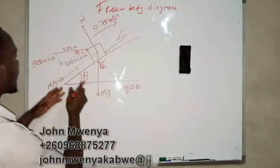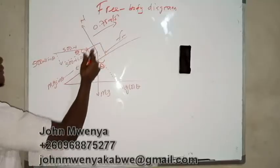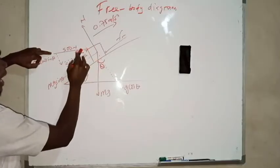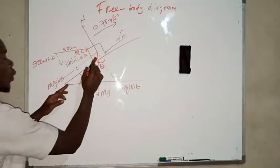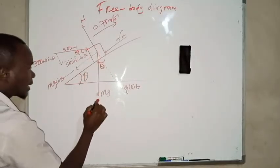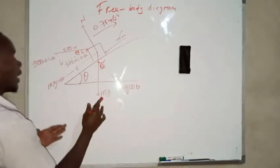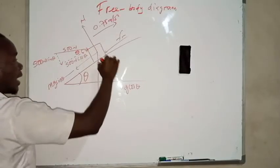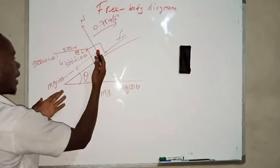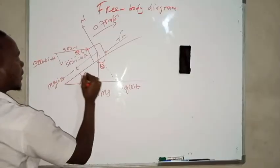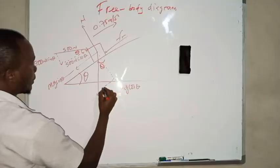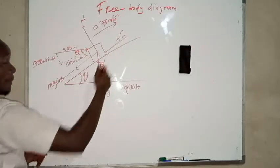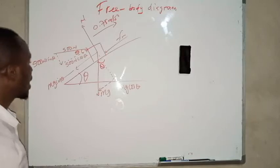Here is the free body diagram. We have the force pushing this block at an angle, giving it an acceleration of 0.75 meters per second squared. The weight mg acts vertically downward. On the inclined coordinates, mg has components: mg cosine theta perpendicular to the incline, and mg sine theta along the incline. Since the block moves in this direction, friction opposes that motion.